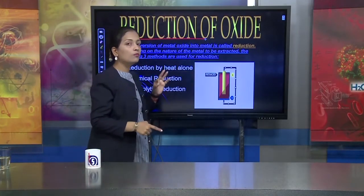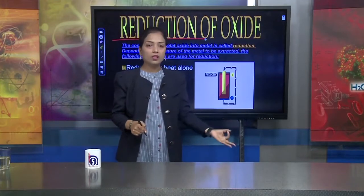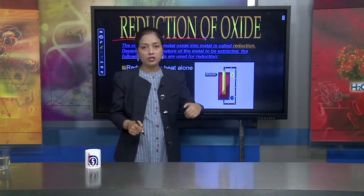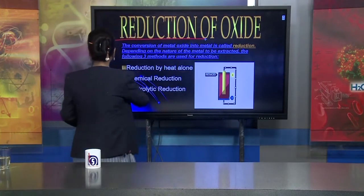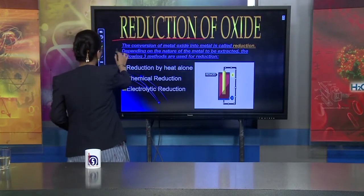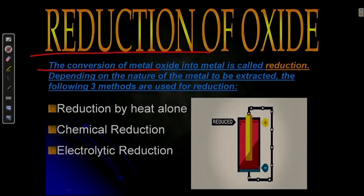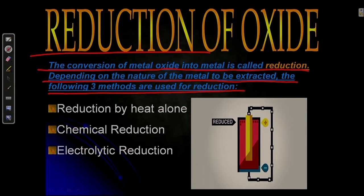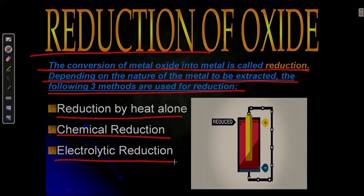We are doing reduction, not oxidation, because we need to remove oxygen. The oxide formed through calcination and roasting must have its oxygen removed. The conversion of metal oxide into metal is called reduction. Depending on the nature of the metal to be extracted, three methods are used: reduction by heating alone, chemical reduction, and electrolytic reduction.